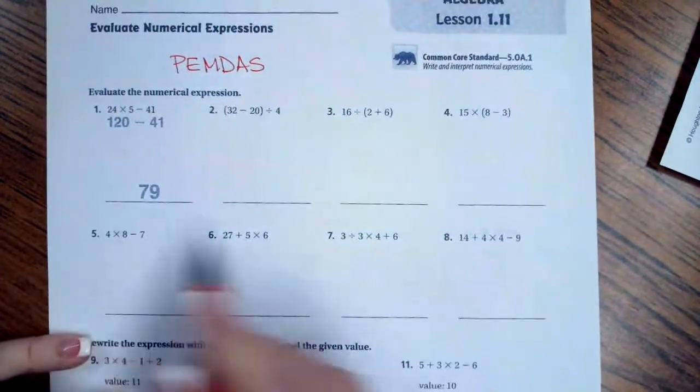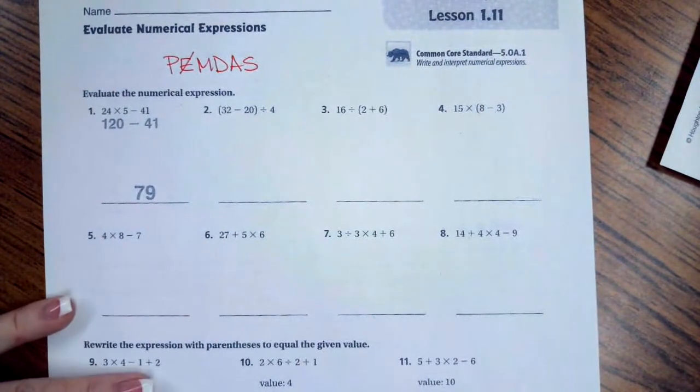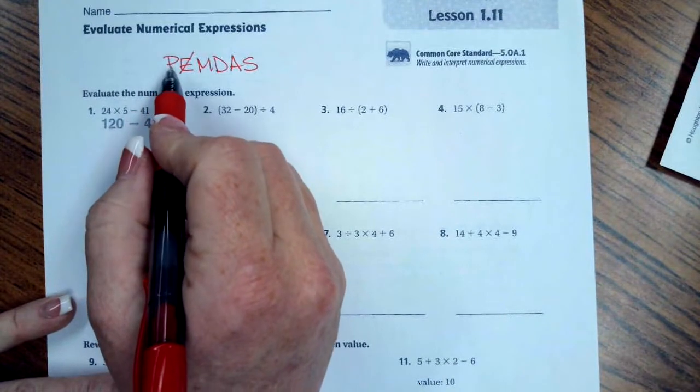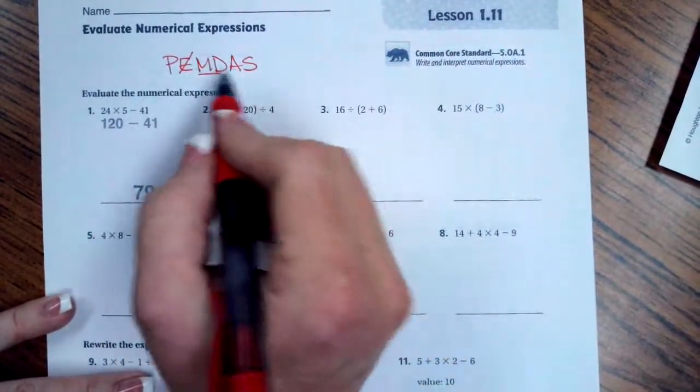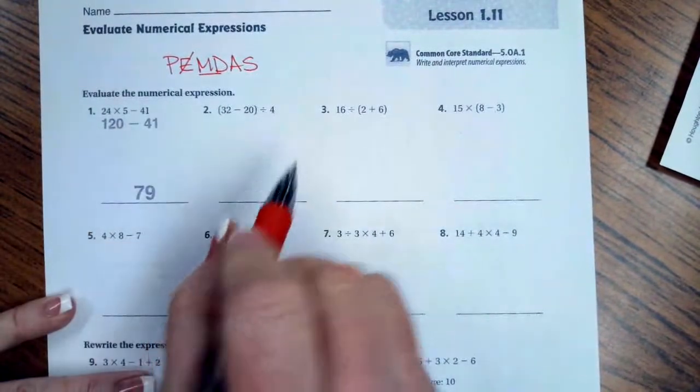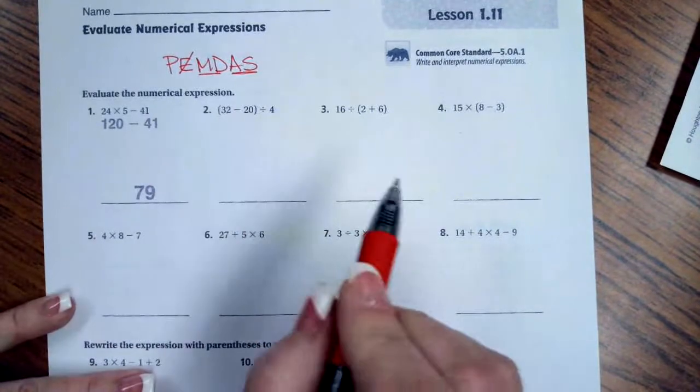We don't have any exponents in any of these, so I'm going to cross that off. We don't need to worry about that. What we mean here is parentheses, and then multiplication and division are together. It's whichever one comes first, going left to right, and addition and subtraction, same thing. Whichever one comes first, going left to right.